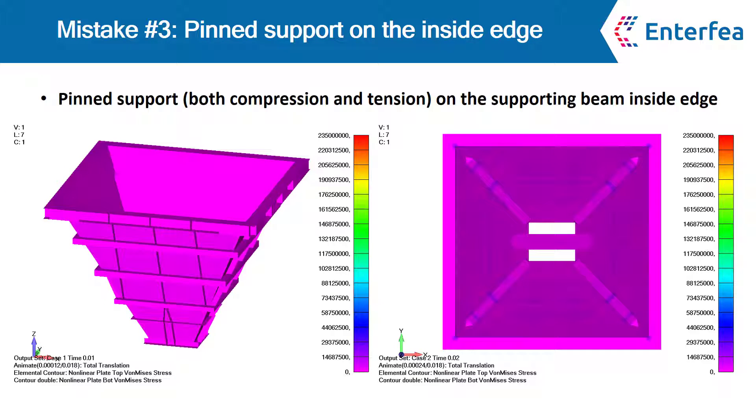After I have analyzed the mistake number two, I'm already a bit wiser. I know that the eccentricity in this case is very important, so I can pinpoint the exact spot where I will make a linear support. Obviously that would be the inside edge of the supporting beam where the rotation will actually take place.